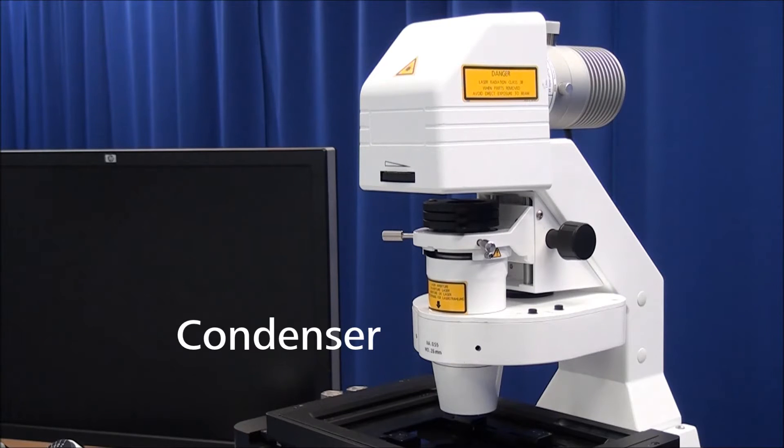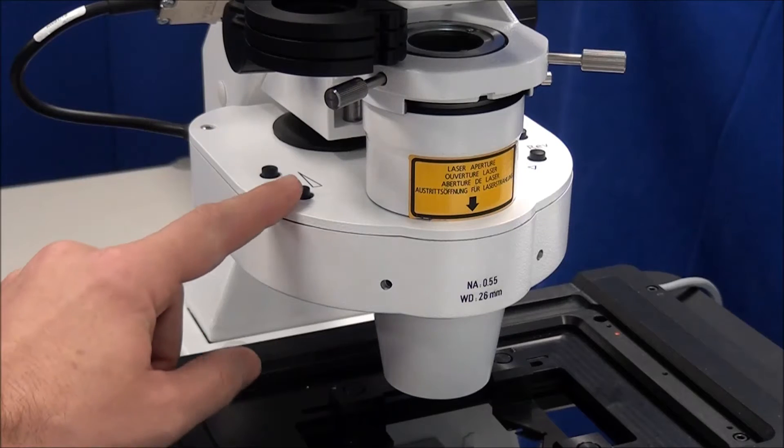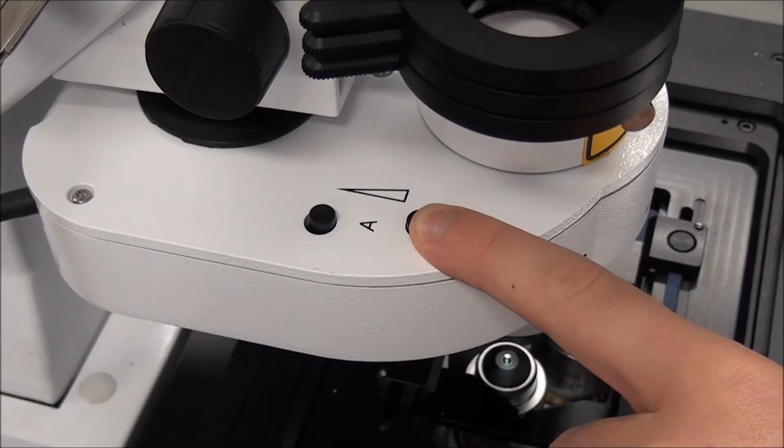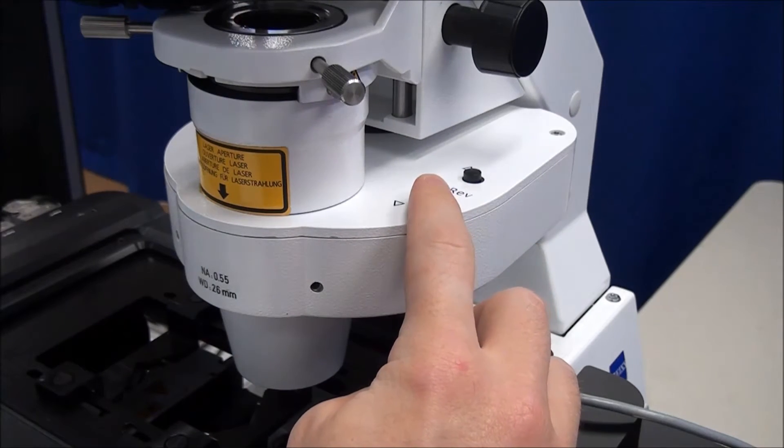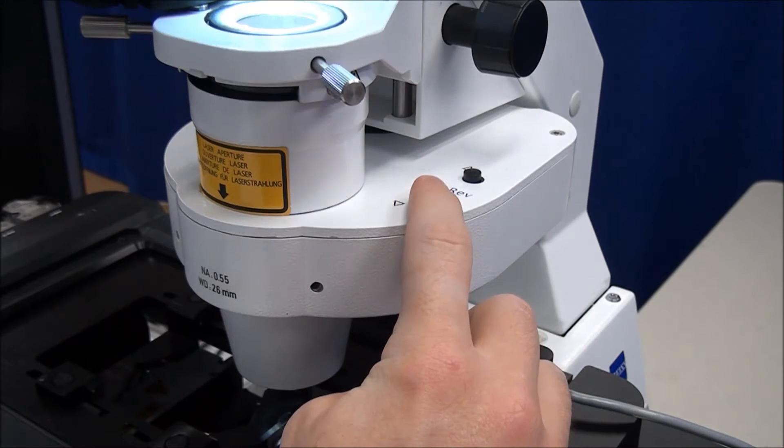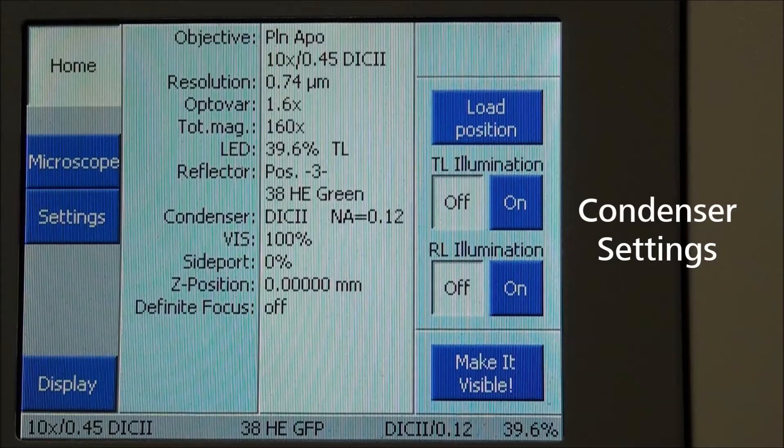Open the aperture diaphragm located on the condenser to its widest open position. If the condenser allows for multiple contrast methods, set the current method to H for bright field. Sometimes this is labeled BF.